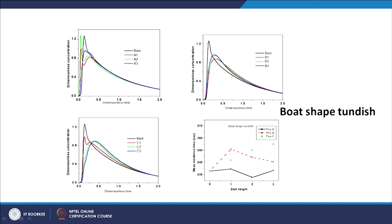Looking at the RTD curves, the configuration with position C and dam height 3 has the largest plug volume, a minimum and delayed peak. This indicates the best mean residence time for the boat-shaped tundish. In the bare case, however, for position A and height 2, the green line starts early with a somewhat higher peak, indicating a very small mean residence time.